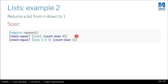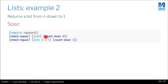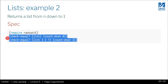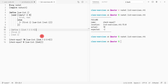So the next example: we're going to return a list that counts all the way down to one. So the countdown of zero is empty list, and if you do three, it goes three, two, one. So let's copy these two tests.